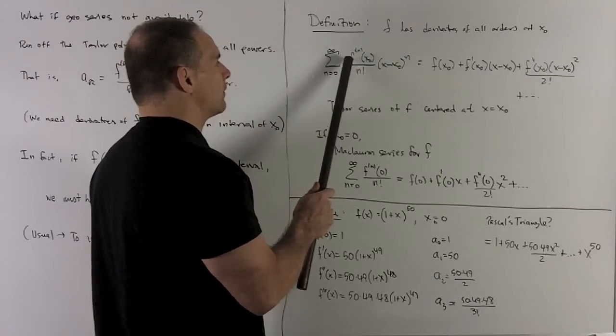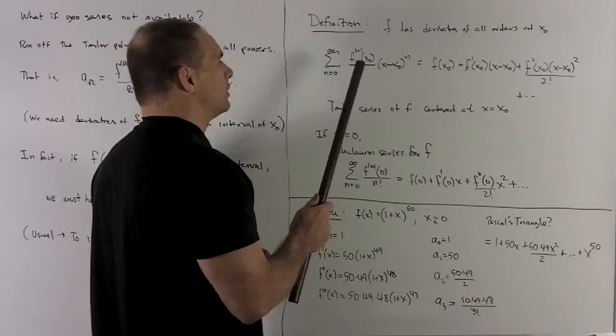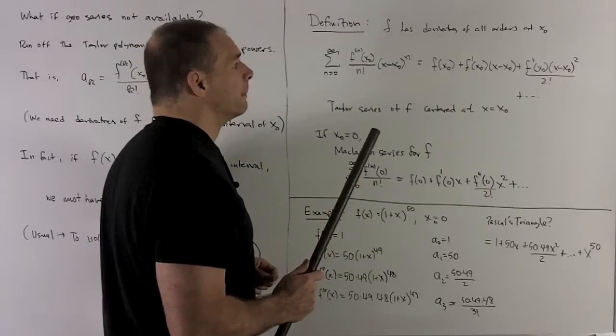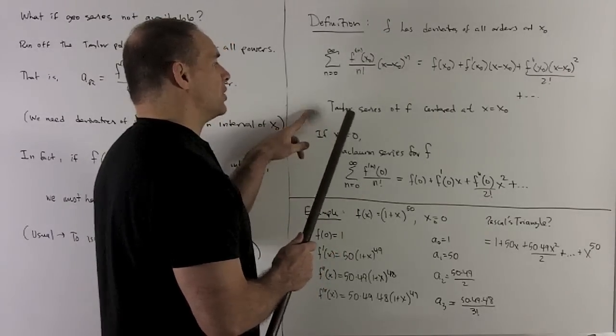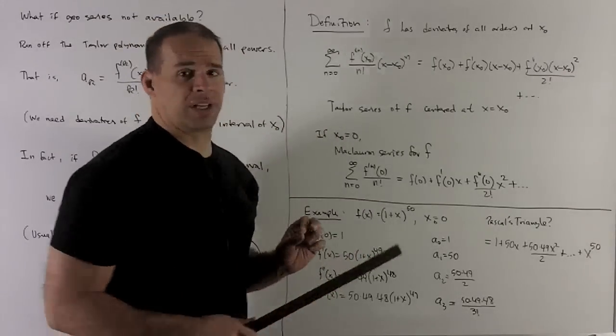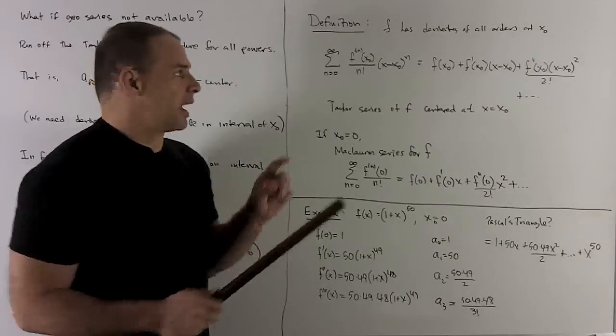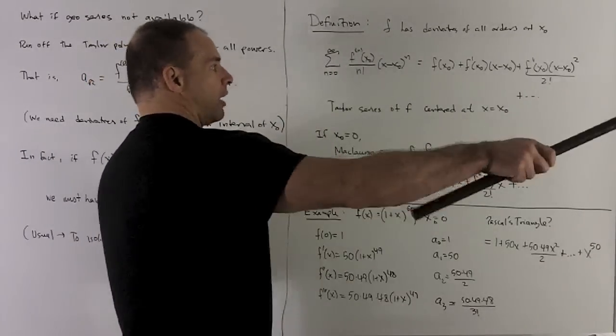we're going to take n derivatives of f evaluated at x zero, divided by n factorial, multiplied by x minus x zero raised to the nth power. We're going to call this the Taylor series of f centered at x equal to x zero. So note this is just your Taylor polynomial, and now we're just going to let the top part run off to infinity.